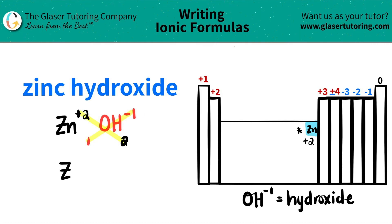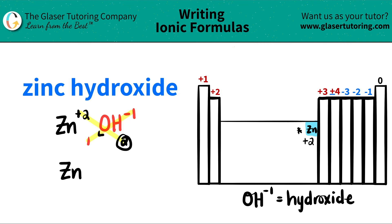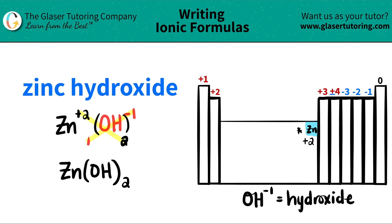So now let's get to it. I have zinc — I only need one of them, so I don't have to write a subscript. But when you have multiple polyatomics, in this case I have two hydroxides, I need parentheses — that's a rule. So I'm going to put parentheses, OH, close the parentheses, and now I say how many I have: two. So zinc hydroxide is Zn(OH)₂.